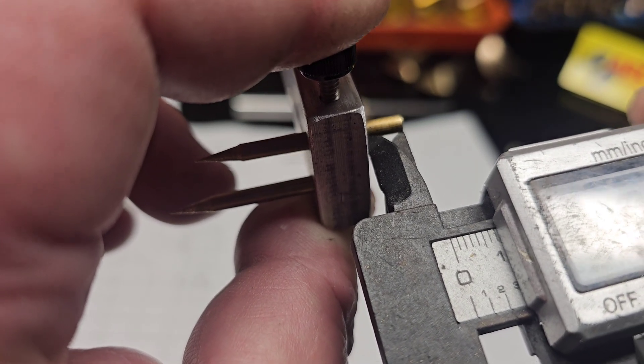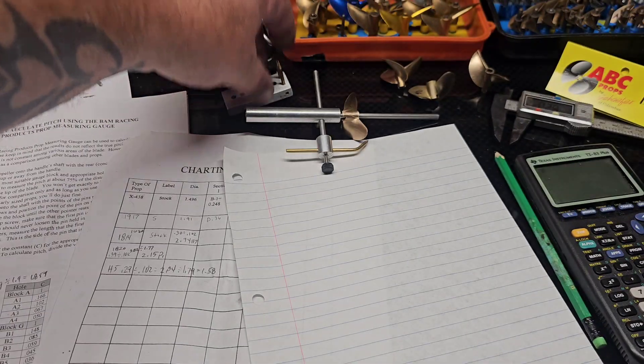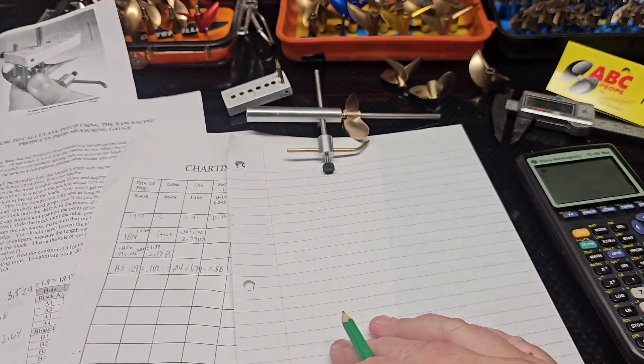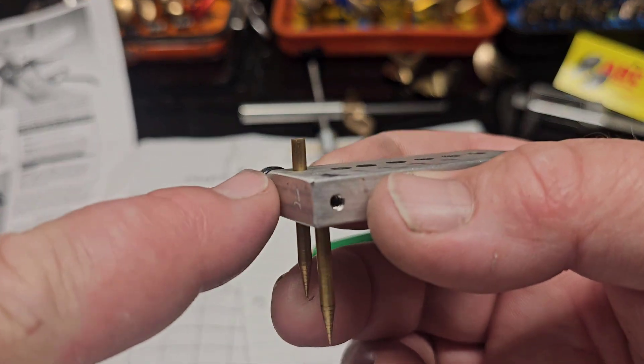Looks like 0.28. So we got a 0.28. We're going to take our formula. We just found D. D is the measurement you get off the block.